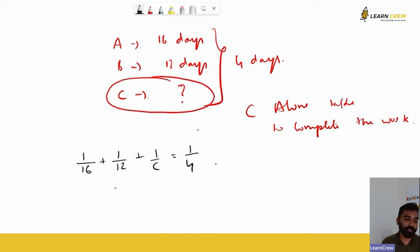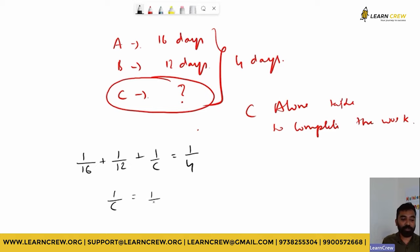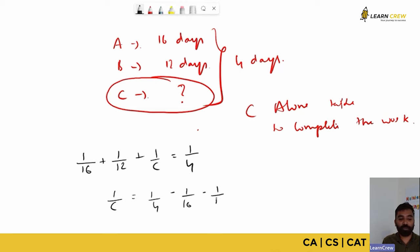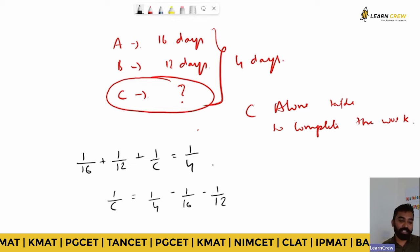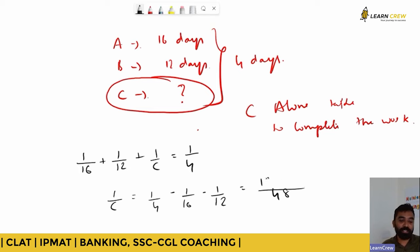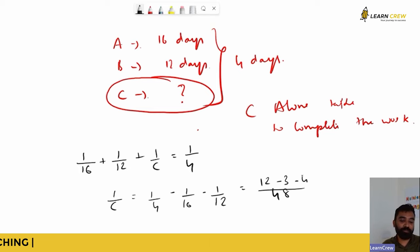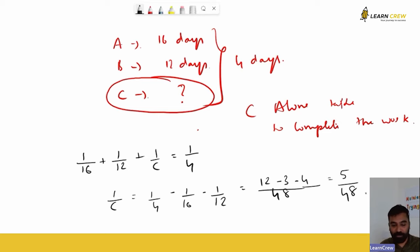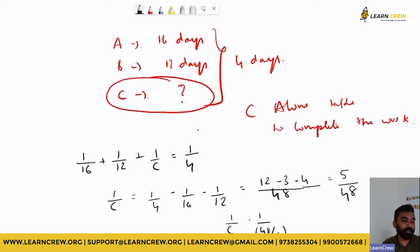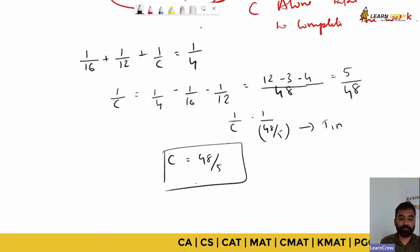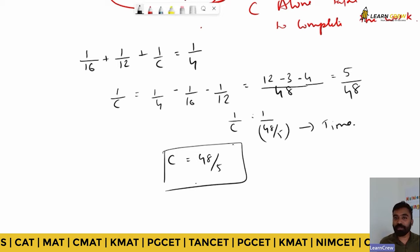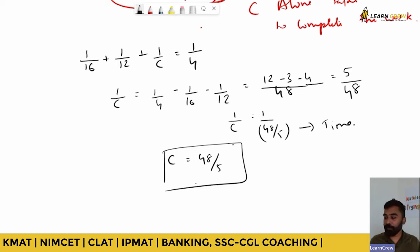To find C alone: 1/C = 1/4 − 1/16 − 1/12. The LCM of 4, 16, and 12 is 48. So this becomes 12/48 − 3/48 − 4/48 = 5/48. Therefore C alone will take 48/5 days to complete the entire work.